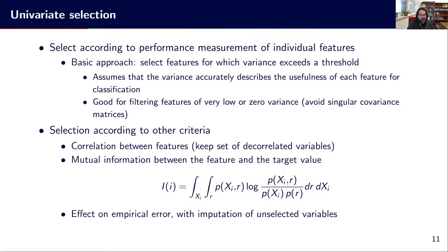We may also look at the effect on the empirical error. The point is to mask one variable — remove it or assign it some imputation values — and see the effect on the empirical error. If replacing a variable systematically degrades the empirical error significantly, it means that variable is useful. When we see there is no impact from replacing that variable by zero or its mean value, it may mean that variable is not useful.